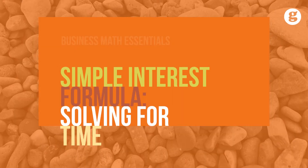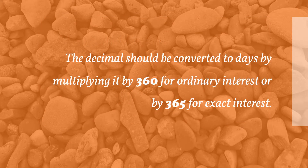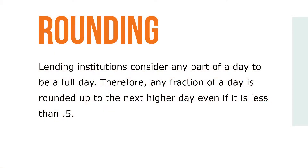When solving the simple interest formula for time, a whole number in the answer represents years and a decimal represents a portion of a year. The decimal should be converted to days by multiplying it by 360 for ordinary interest or 365 for exact interest. Lending institutions consider any part of a day to be a full day. Therefore, any fraction of a day is rounded up to the next higher day, even if it's less than 0.5.